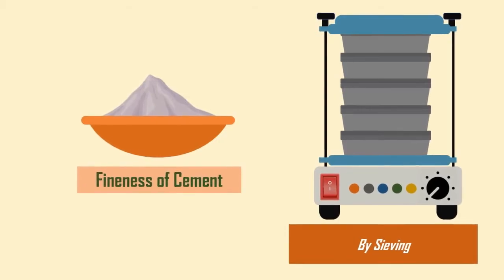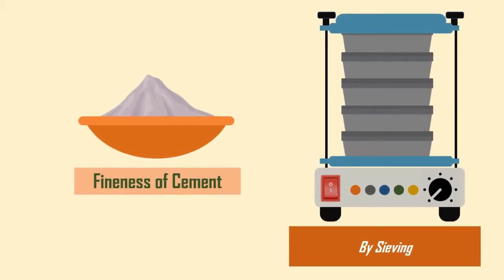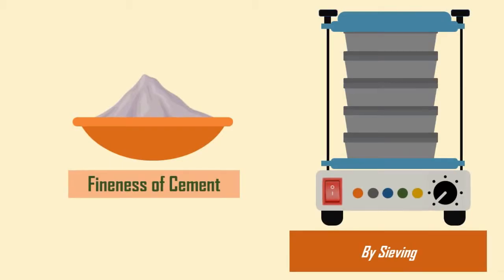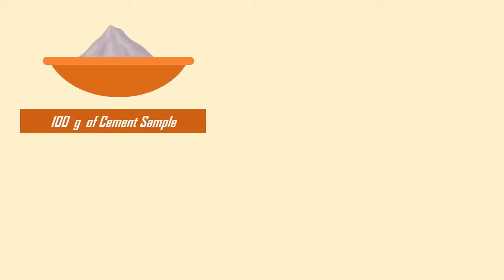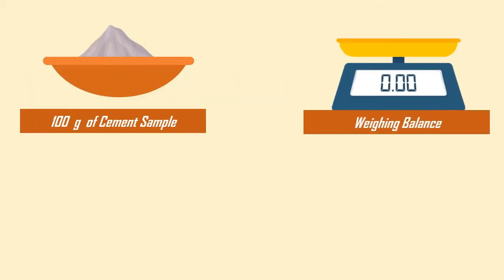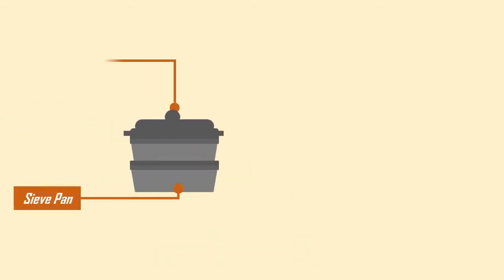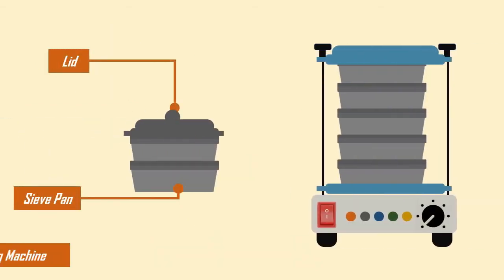So let's find the fineness value for the selected sample of cement. To do so, you will need 100 grams of cement sample, a weighing balance accurate to 1 milligram, a standard sieve of size 90 micron, a sieve pan with lid, and a sieve shaking machine.